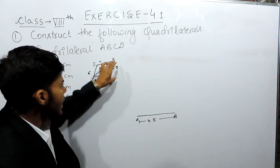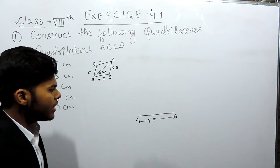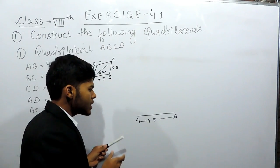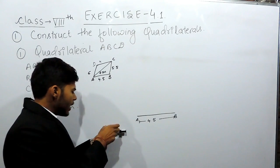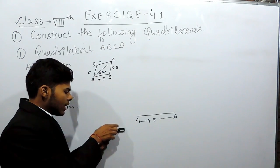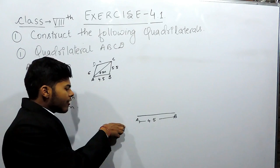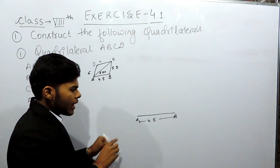Now, what you will do is the side BC is of 5.5 cm. Now, you will open the compass with the help of the ruler till 5.5 cm. Keep the pointed edge of the compass at 0 cm and open it till 5.5 cm.